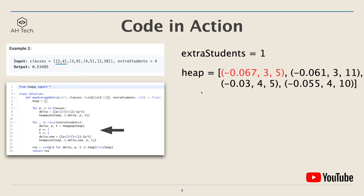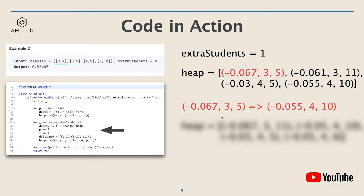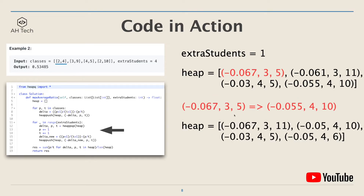We repeat the same process. Now the first class, which already got one extra student, still has the highest delta, so we assign another extra student to it, then calculate the new delta, pass, and total, and update the heap.